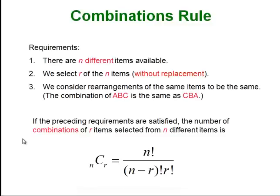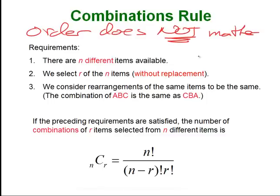A combination is when we are still picking R many things from a set of N, but order no longer matters. That is the big difference between permutations and combinations. If you chose A, B, C as a set of trophies versus A, C, B versus C, A, B — those are all considered the same outcome, because rearranging them no longer gives you a distinct result.